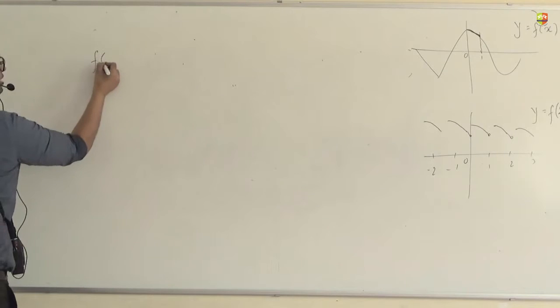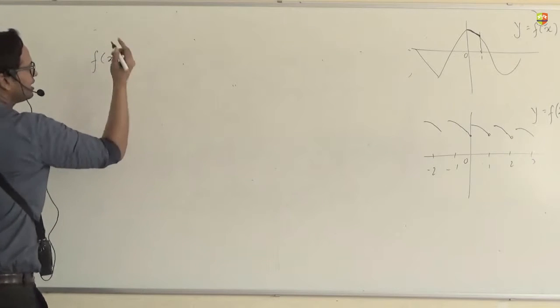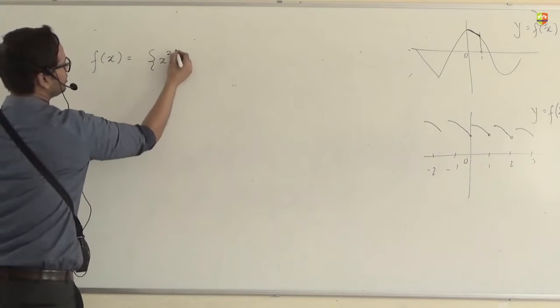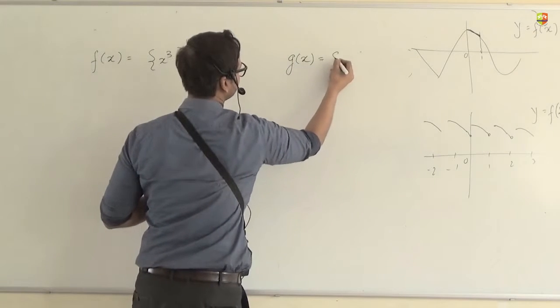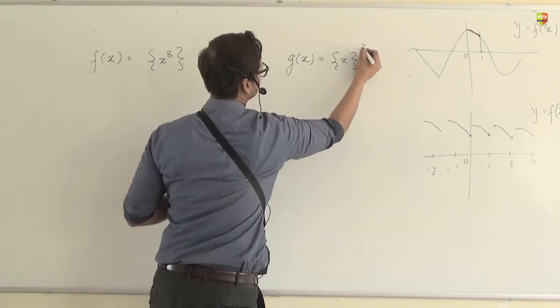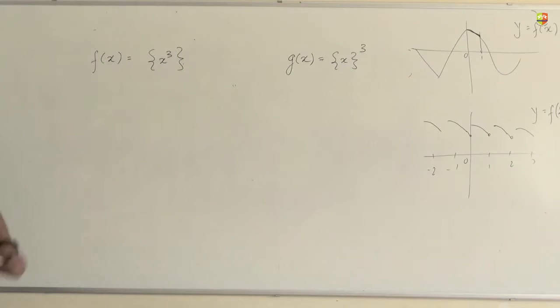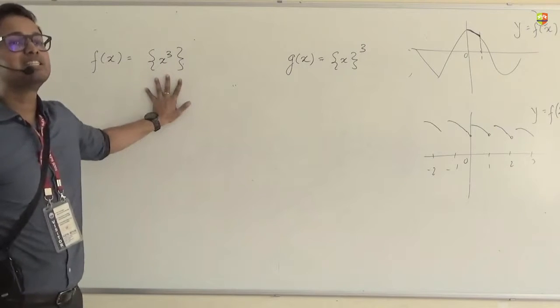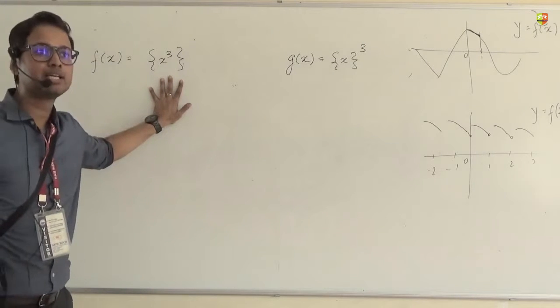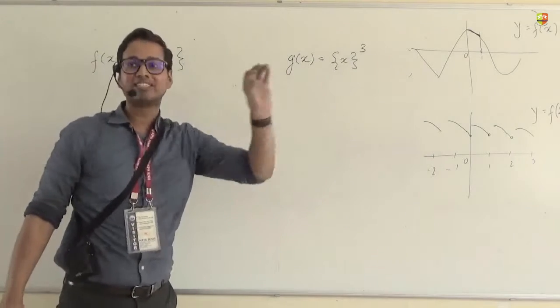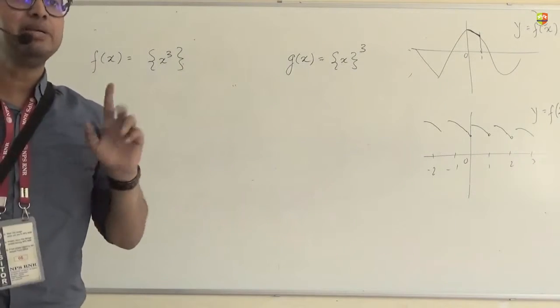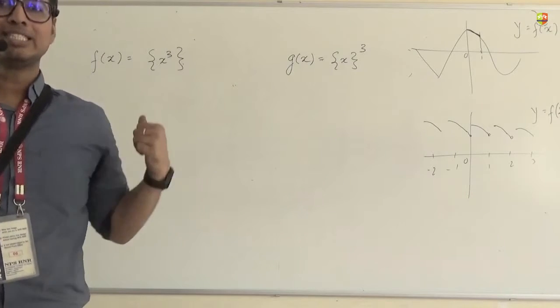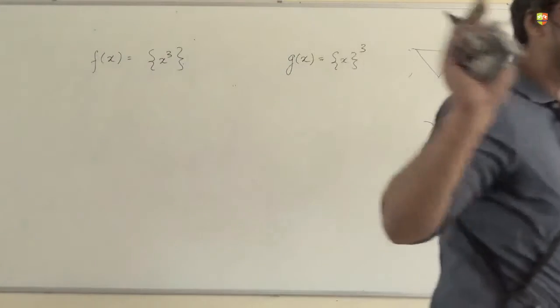Let's say I need to draw this graph. So Anitya suggested x cube gif and from my side I am giving you one more function g of x. Please draw these two graphs to understand the difference between what happens when you make the fraction part of the whole thing and what happens when you do the fraction part only for x. Very important. If you understand this then you will be able to solve any complicated graphs.